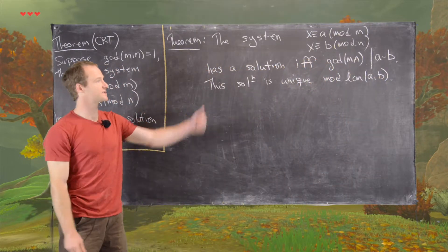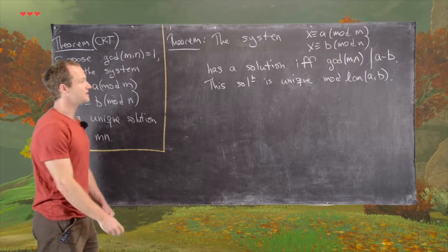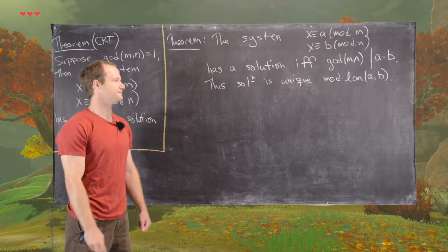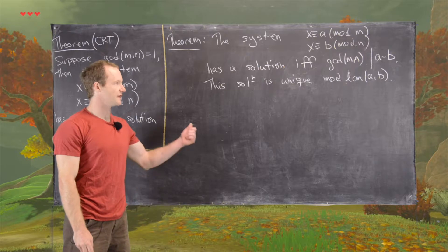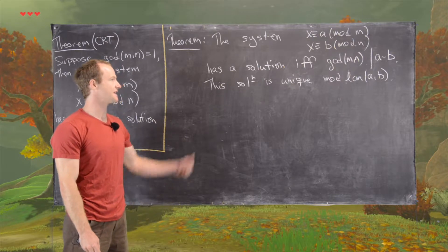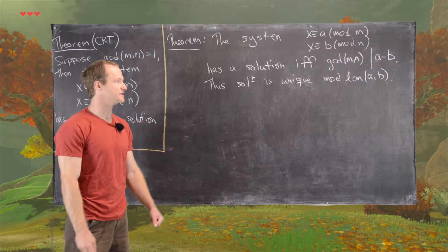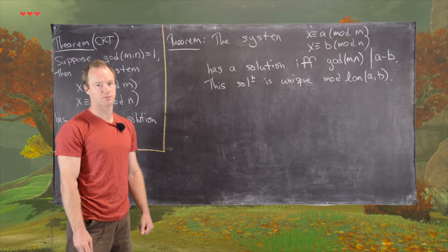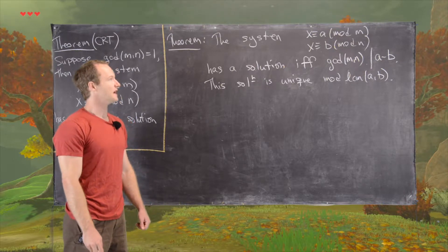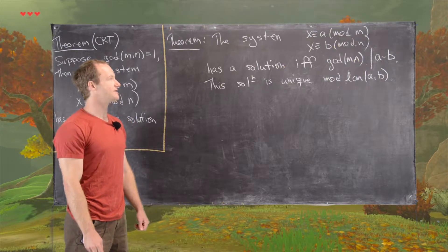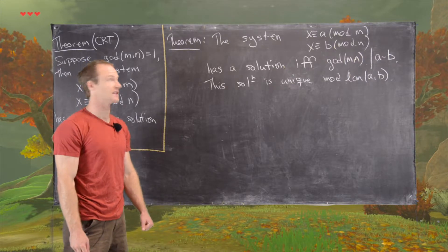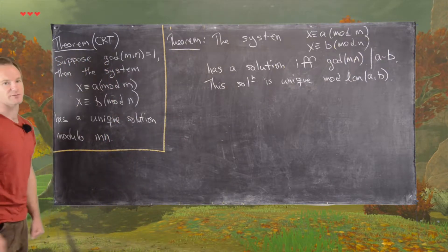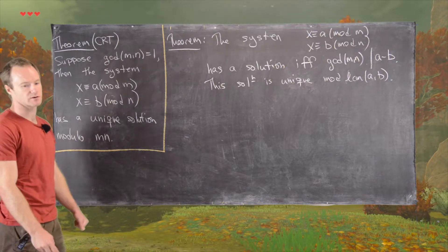Notice that if the GCD is 1, well, 1 divides any number, so that's why there's always a solution in that case. And if the GCD is 1, then the LCM is equal to just the product. So if you have 1 as the GCD of M and N, this collapses to the special case of the Chinese remainder theorem with two linear congruences.